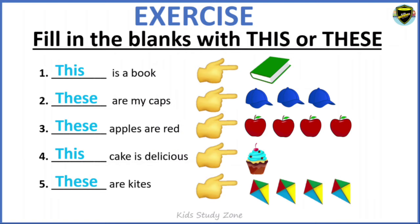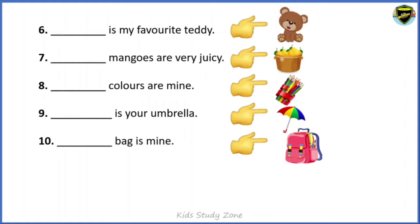___ is my favorite teddy. We are talking about one teddy — that is singular. So we write 'This is my favorite teddy.' Next: ___ mangoes are very juicy. We are talking about many mangoes, which is plural. So we write 'These mangoes are very juicy.' Next: ___ colors are mine. Many colors means plural, so we write 'These colors are mine.'